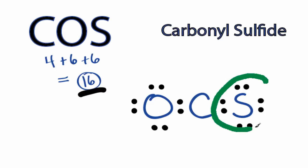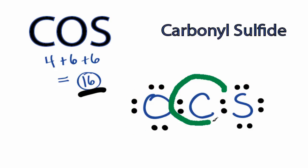This sulfur here has 8, so it has an octet, and the oxygen has 8, it has an octet. However, the carbon in the center only has 4 valence electrons, so it doesn't have an octet.